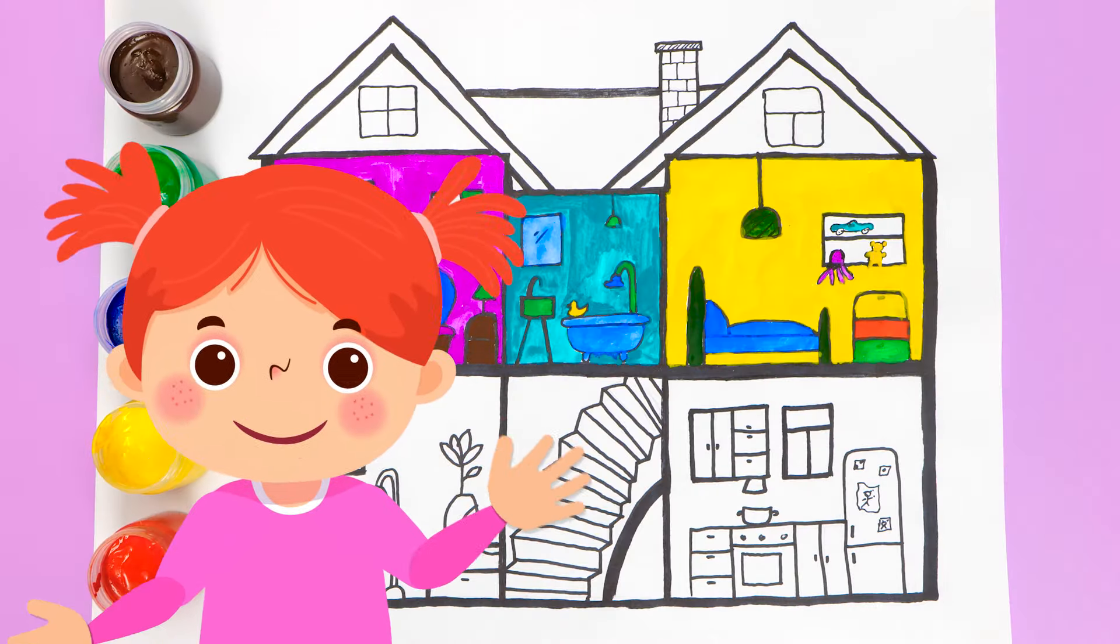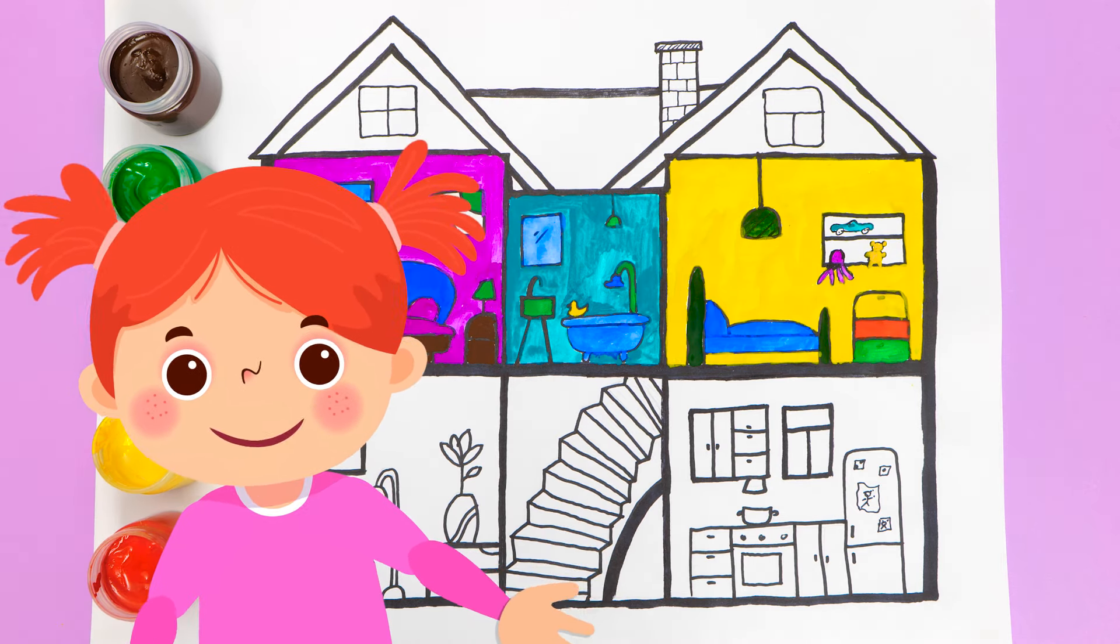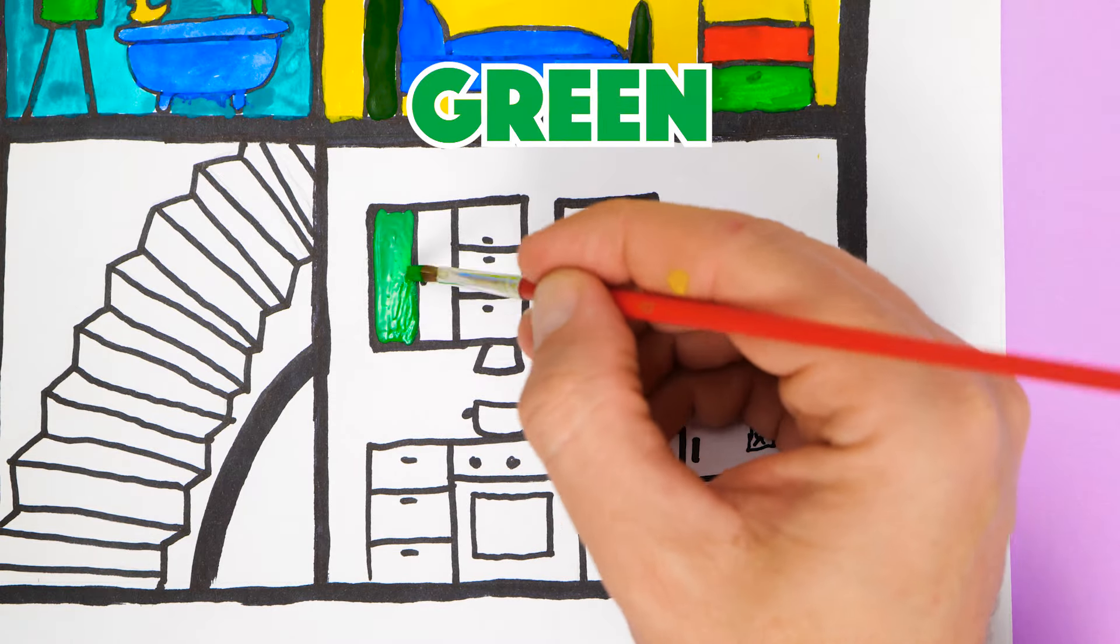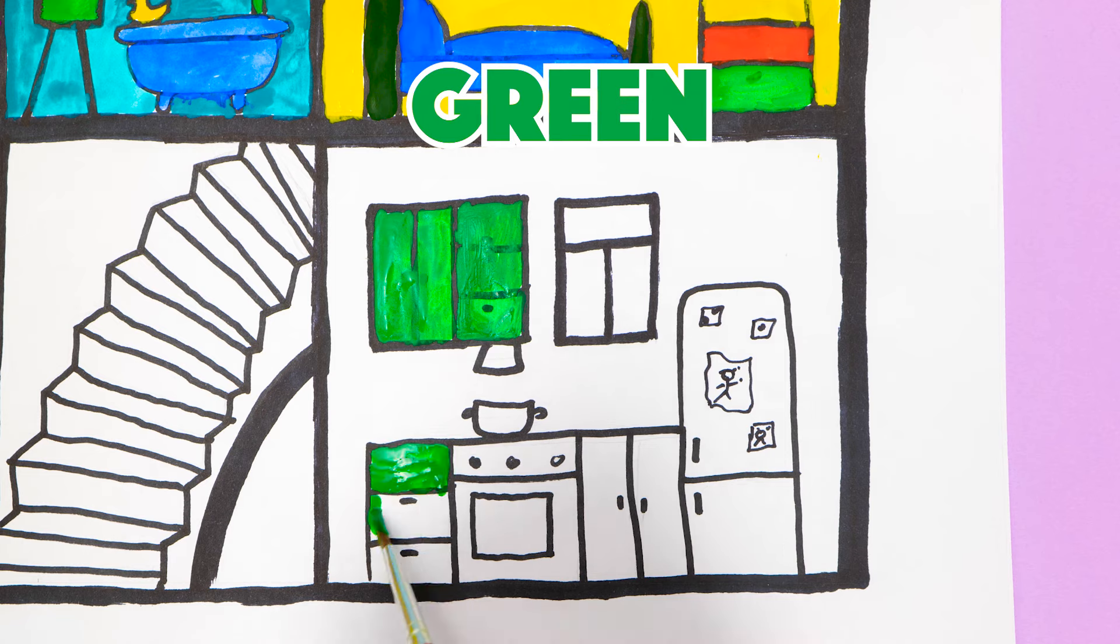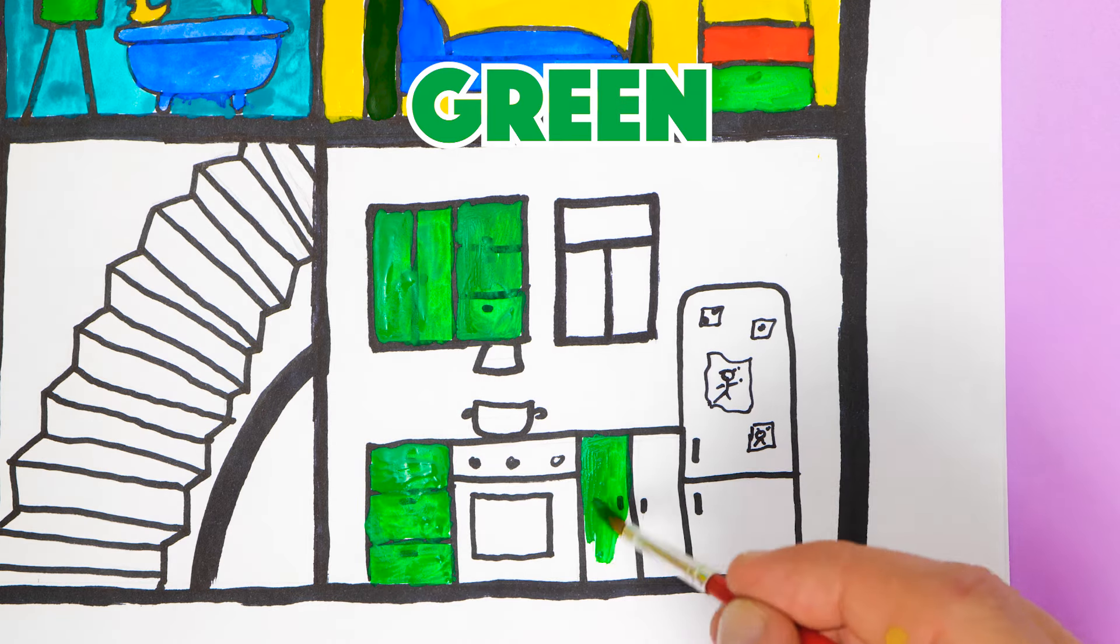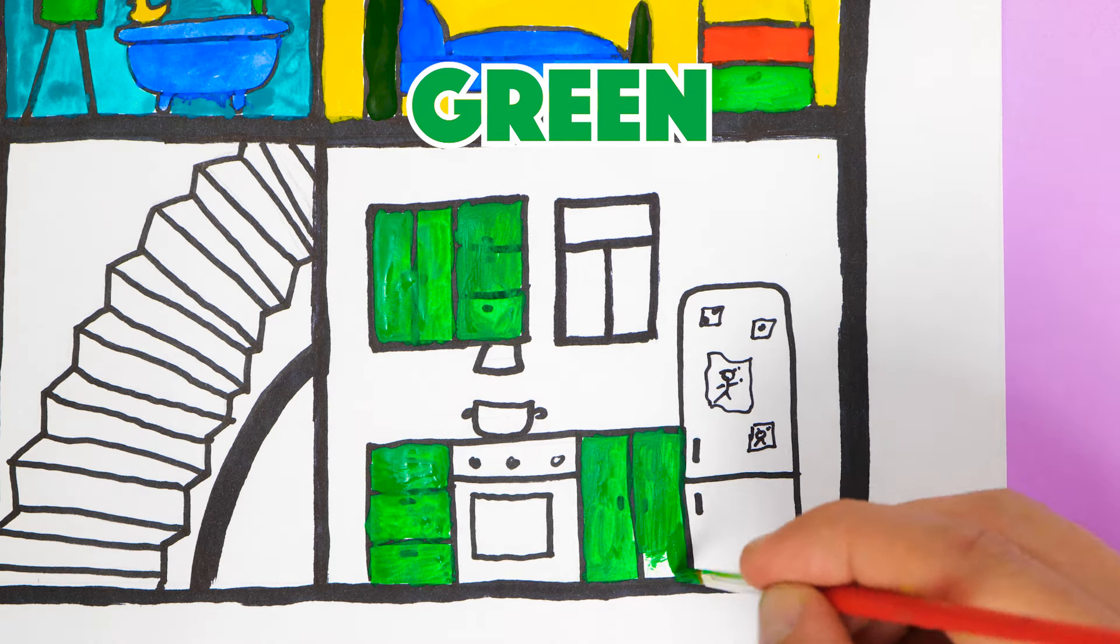Look, friends. We've already made half the house bright. Do you like it? Ah, this is my favorite room in any house. The kitchen. It always smells so good there. And it's very cozy. And you can have a snack when you're hungry.